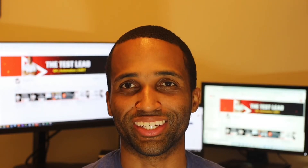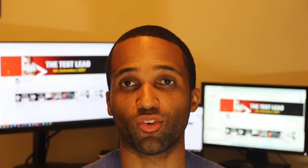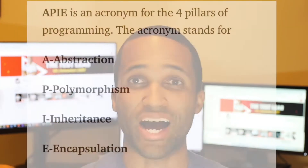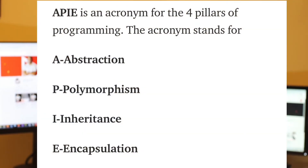Hey YouTube, it's the Test Lead, and today's video is the four pillars of object-orientated programming. The four pillars of OOP are represented by the acronym API. API stands for abstraction, polymorphism, inheritance, and encapsulation. These are the four core principles of OOP.